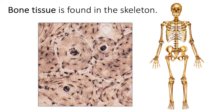Bone tissue is also connective tissue. It's a solid that composes your skeleton and arranges into these cylindrical units called osteons. Important cells of bone tissue are osteoblasts, osteocytes, and osteoclasts. The function of the skeleton is to provide a framework, and overall bone tissue resists compression and torsion — torsion being a twisting force.